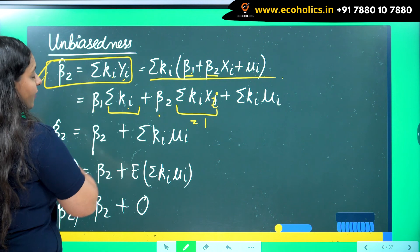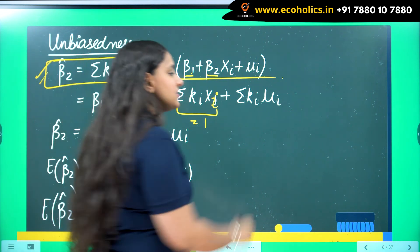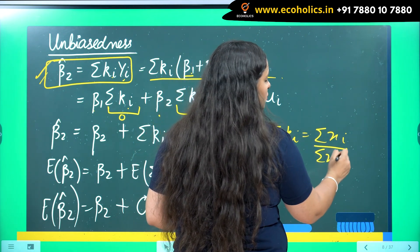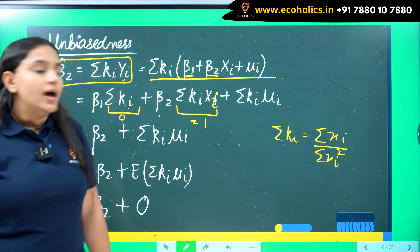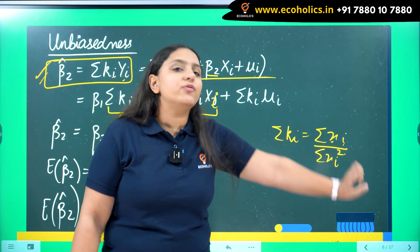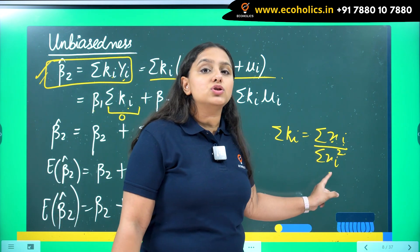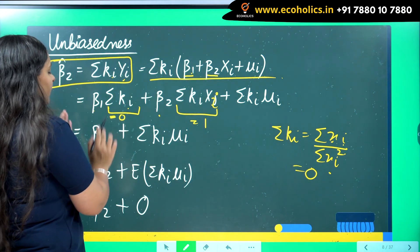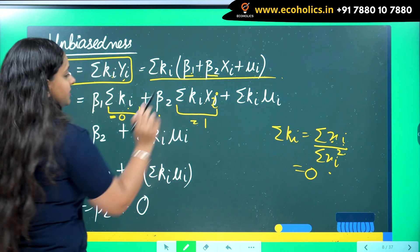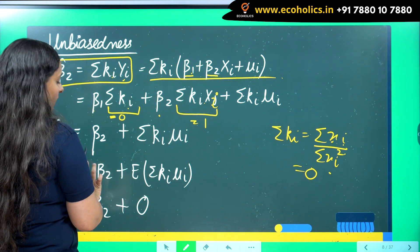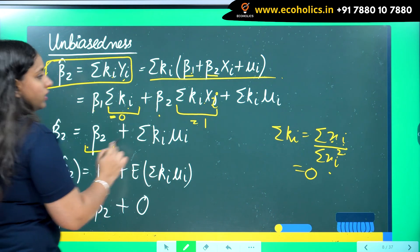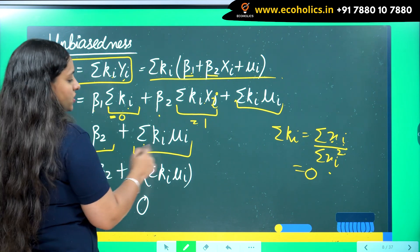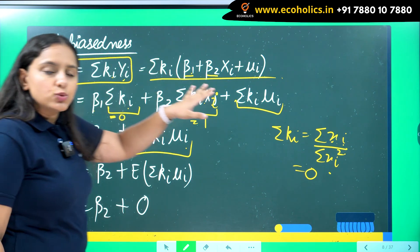Summation ki equals summation xi divided by summation xi squared. Since xi represents deviations from the mean, summation xi equals zero, making summation ki equal to zero. Therefore the β₁ term vanishes, β₂ times 1 remains as β₂, and we have β̂₂ = β₂ + summation ki·μi.